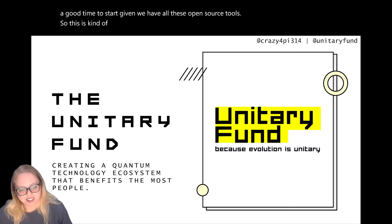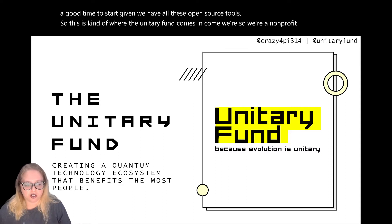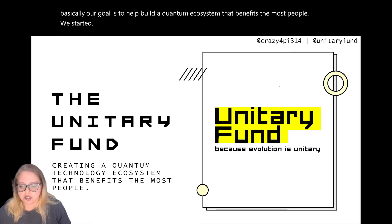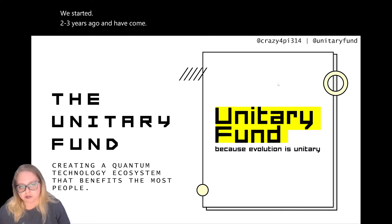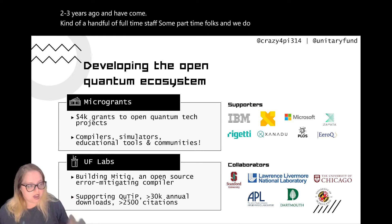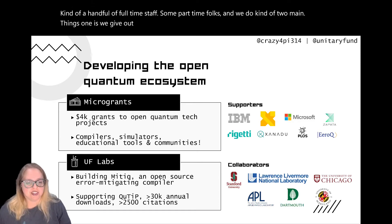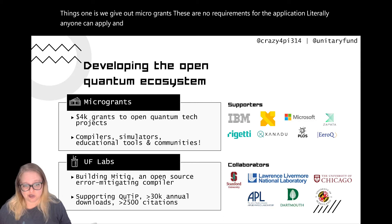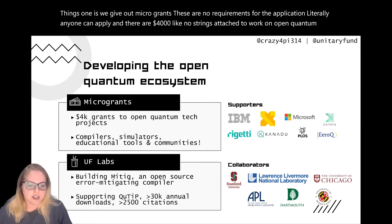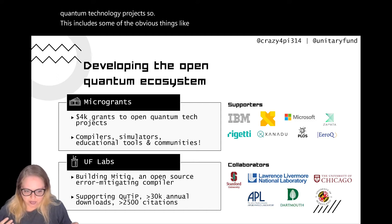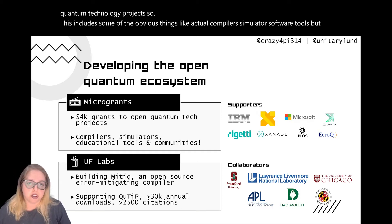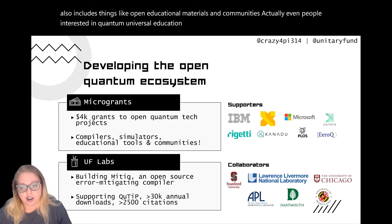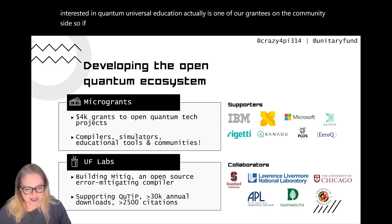This is where the Unitary Fund comes in. We're a nonprofit whose goal is to help build a quantum ecosystem that benefits the most people. We started two to three years ago and have a handful of full-time staff and some part-time folks. We do two main things: one is we give out microgrants — no requirements for the application, literally anyone can apply — and they're $4,000, no strings attached, to work on open quantum technology projects. This includes compilers, simulators, software tools, but also open educational materials and communities. Quantum Universal Education is actually one of our grantees.